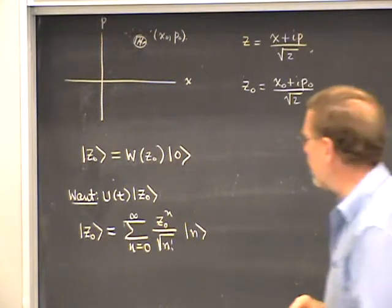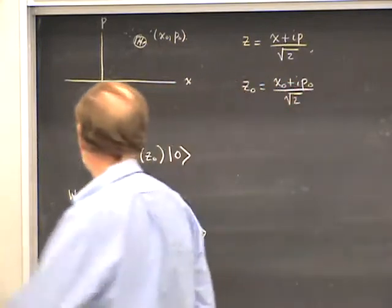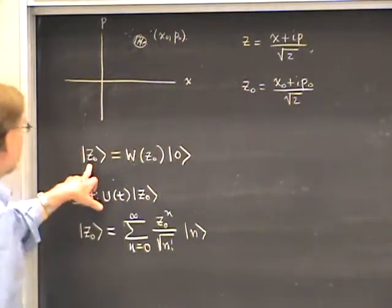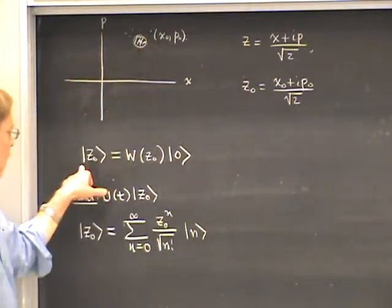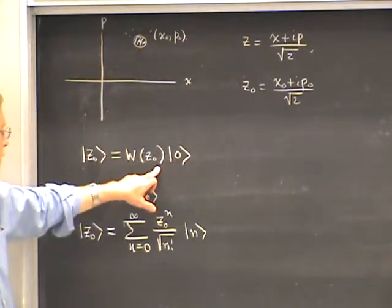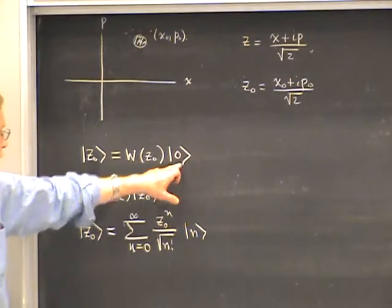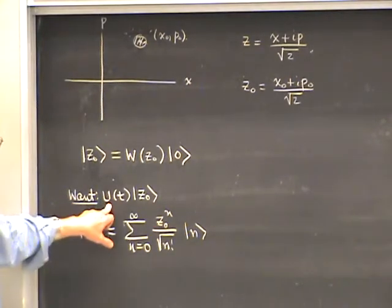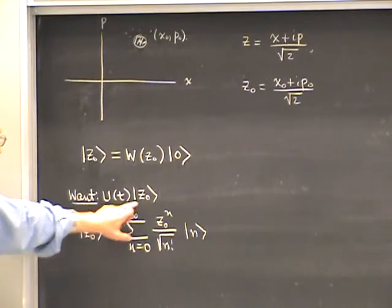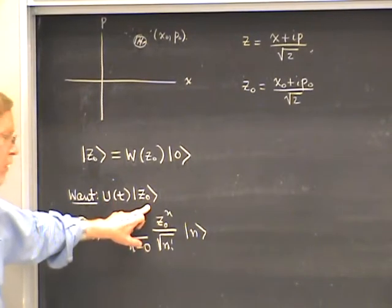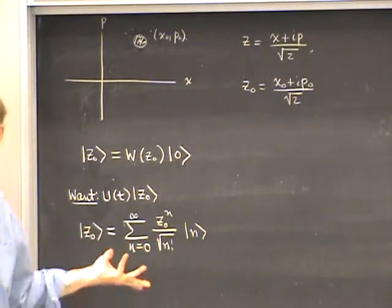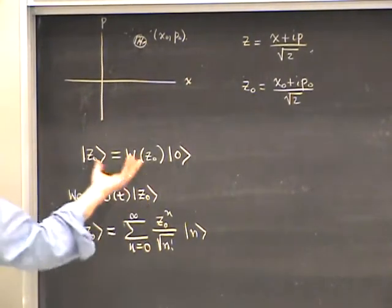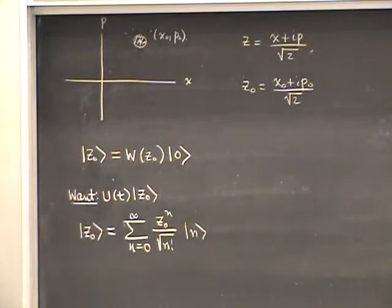We then define a coherent state called C₀ which is centered at that position. This is the Heisenberg operator acting on the ground state, and we're going to be interested in the time evolution operator applied to this initial state C₀, just to see what happens — how does it compare to the classical motion?